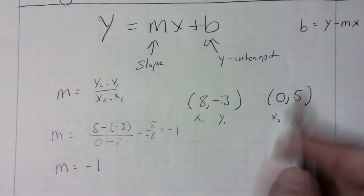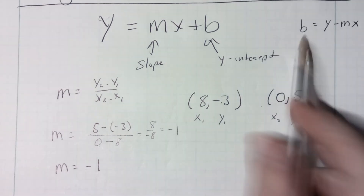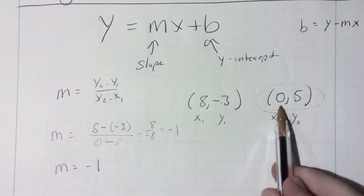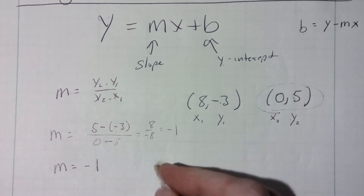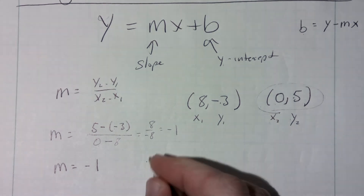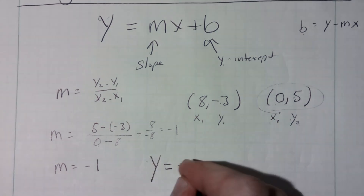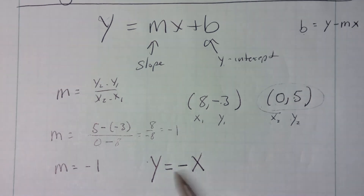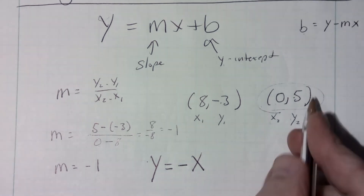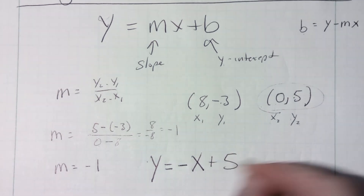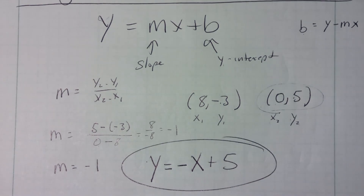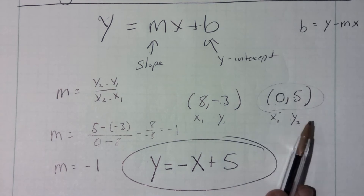Now I need to find my b value, but it's already given to us because the b value is when x is zero. So I can write my equation: y equals negative one x — you really don't need to write the one — plus five. And we've written our equation. We found our slope, and then we found the b value.